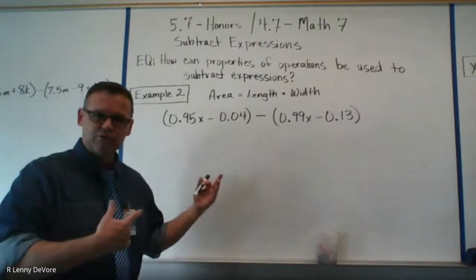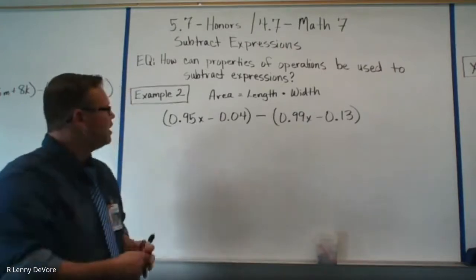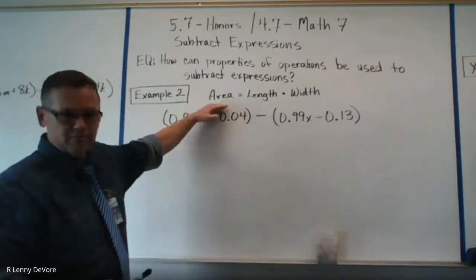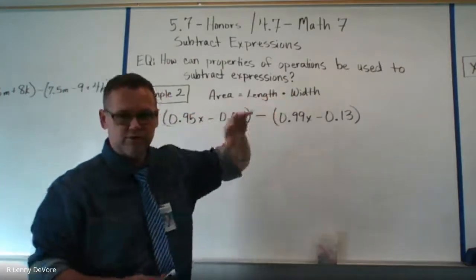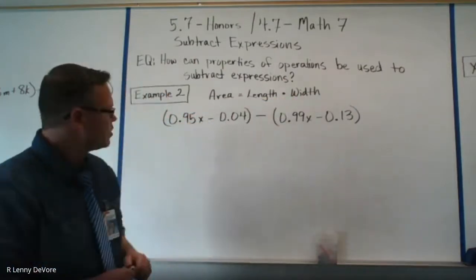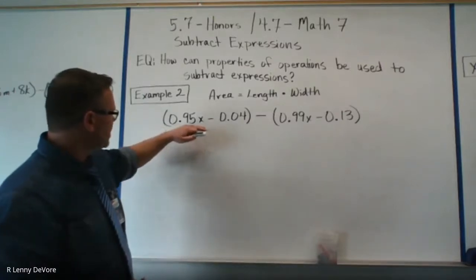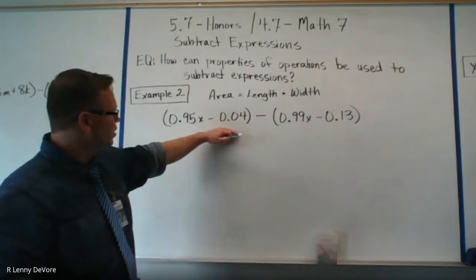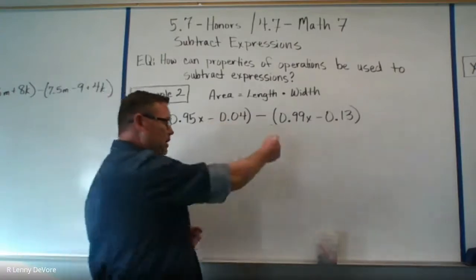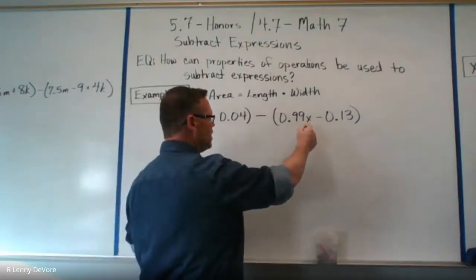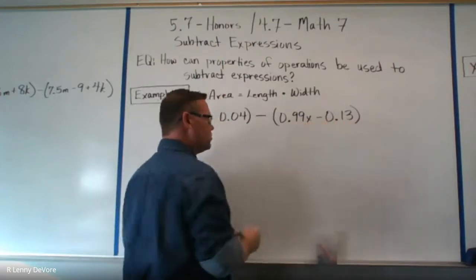Now a reminder here — when you're going through example two and looking at the work I did here, they're talking about the area. The area equals length times width, so don't forget that. I have this set up already: 0.95x minus 0.04, minus 0.99x minus 0.13.